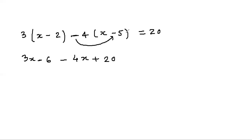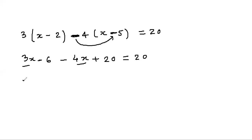Because this is a minus sign before the bracket, this sign will change. If there is a plus sign, sign change will not take place. So we get 3x - 4x, which is not 7x but rather -x, and -6 and +20 remain.